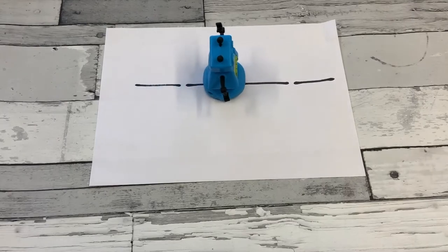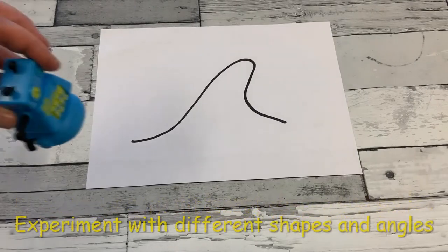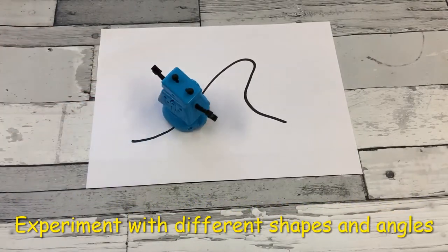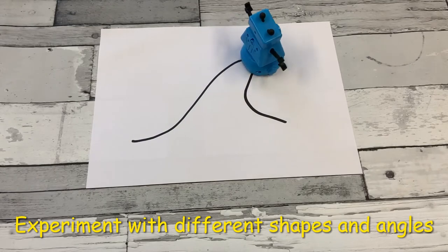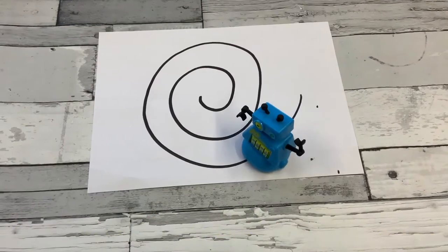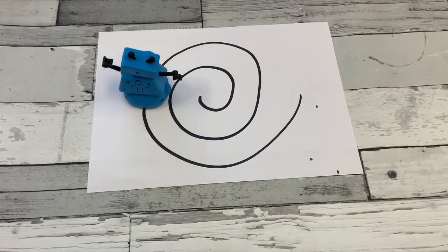He likes to follow a line but how big can the spaces get? Drawbot does not like sharp corners but you can investigate how sharp you can get away with. You can experiment and find the most complicated pattern that he could follow.